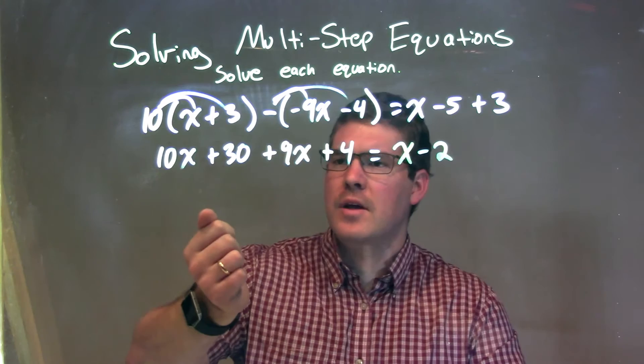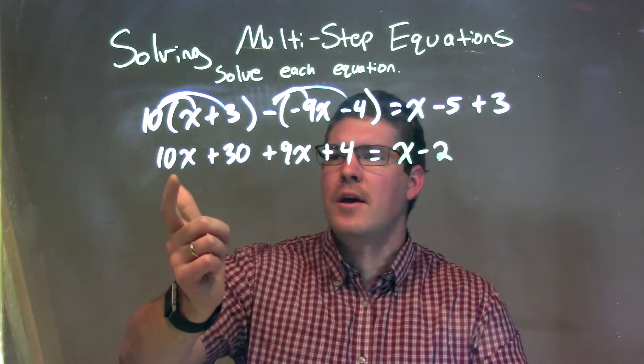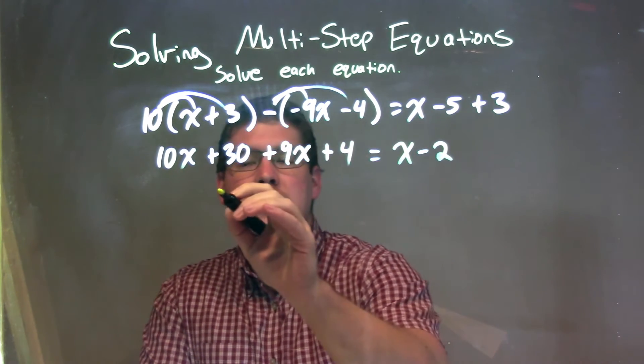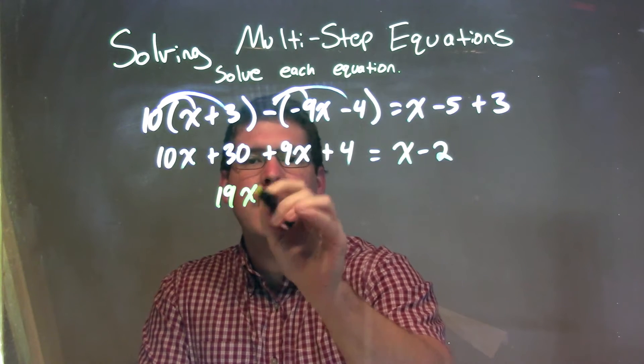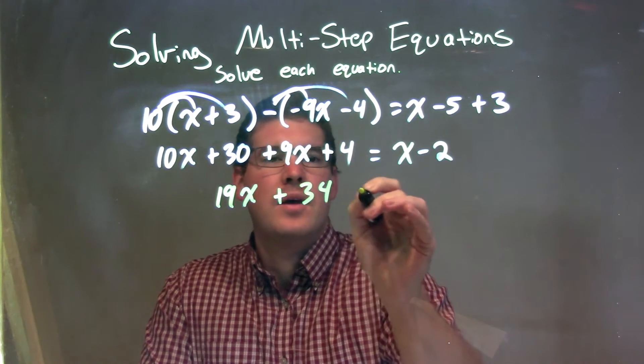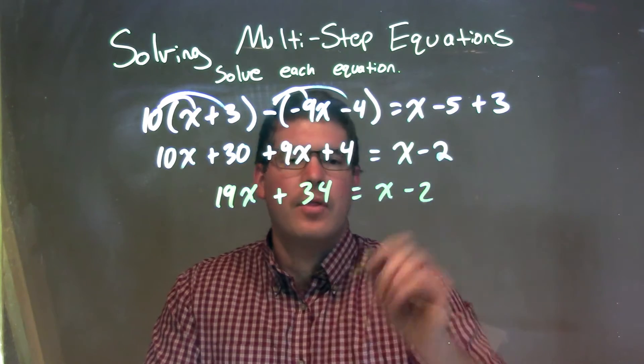I'm going to do the same thing to the left-hand side - combine my like terms. 10x and 9x combine to be 19x, and 30 plus 4 is 34. We bring down the x minus 2 on the right.